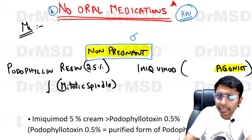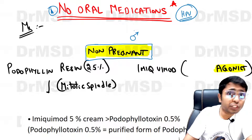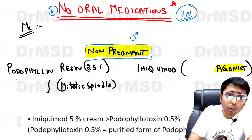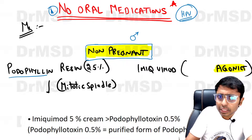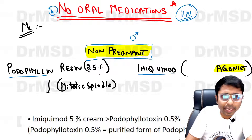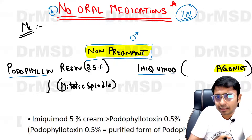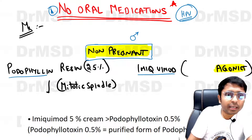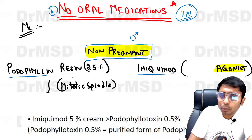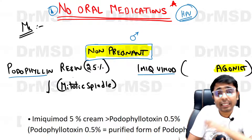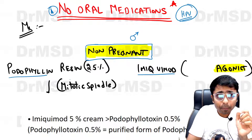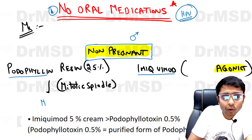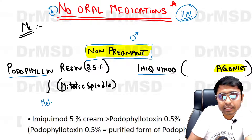In non-pregnant women and also in males, treatment can include podophylline resin application or imiquimod. The mechanism of action of these two differs: podophylline resin acts on the metaphase and thereby causes metaphase arrest.